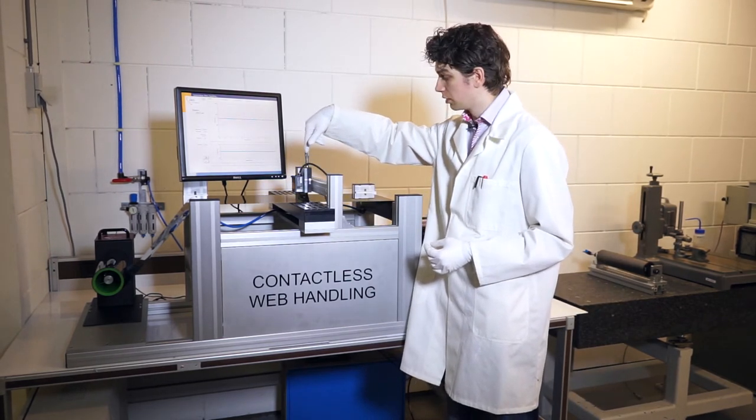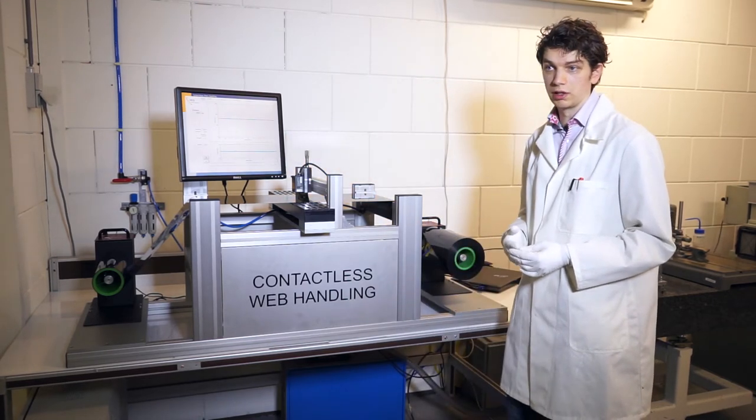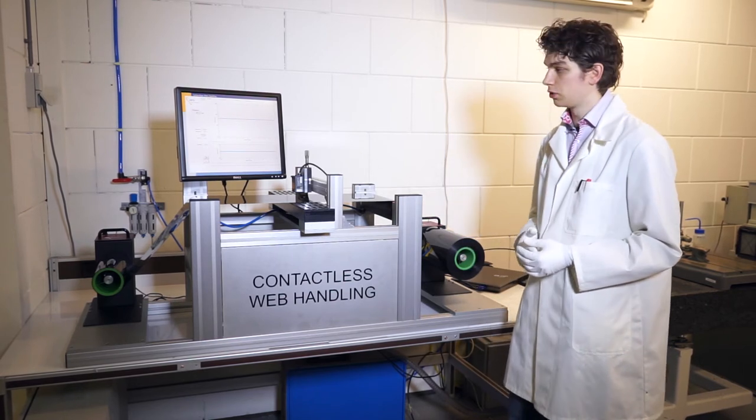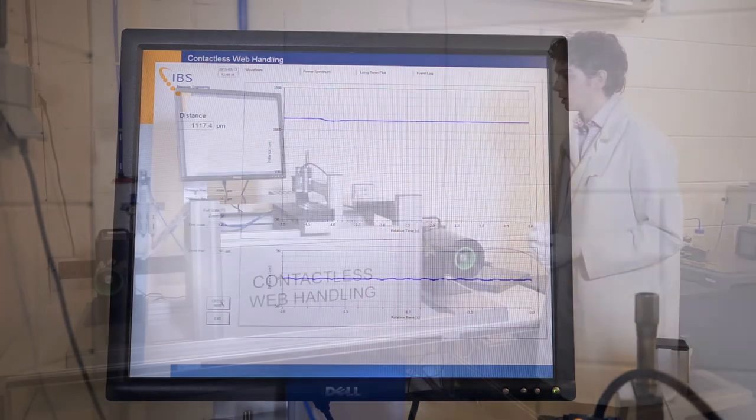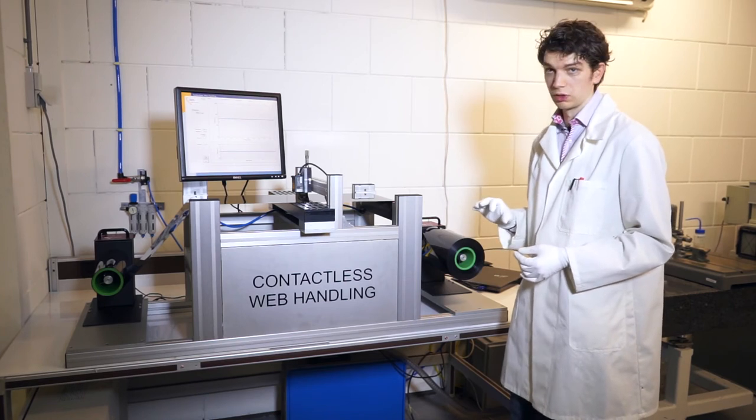The signal of the sensor shows the fly height of the film above the air table surface, and it is connected to the screen. In the upper part of the screen you see the signal over time, and in the lower part you see a close-up so you can more easily see the vibrations.